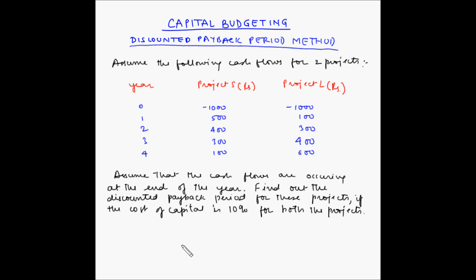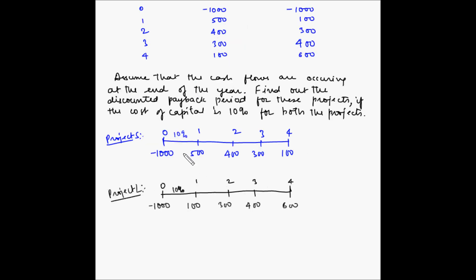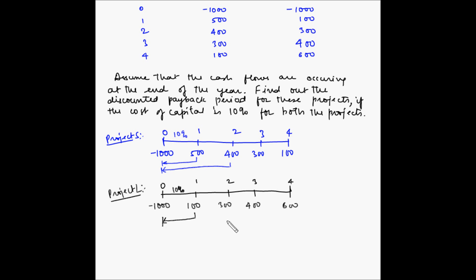Let us quickly draw the timelines for these two projects. On the screen you can see the time scale for both Project S and Project L. Since the initial investment is as of today, we should bring all the other cash flows to a value as of today. So for Project S, we find the present value of 500, 400, and so on, and similarly for Project L. The discount rate for both projects is 10 percent.